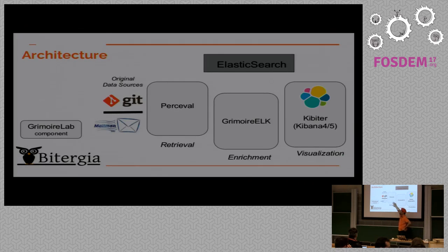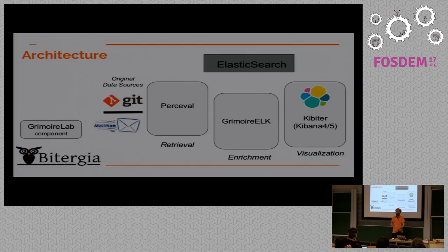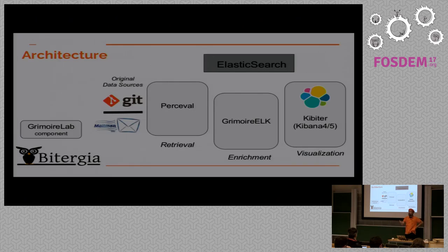Developers have three options. First, they can use Percival themselves — point Percival at the repositories, get the output, and do anything they want. It's written in Python, so it's easy to write simple Python programs. For most data sources, you get a Python generator that you call in a loop and get all the activity in the repository. The second option is using the raw index, querying Elasticsearch to get the same information without needing direct access to the data source infrastructure. The third option is using the enriched indexes, which for most things are good enough and already prepared for querying.